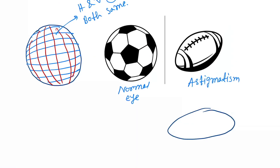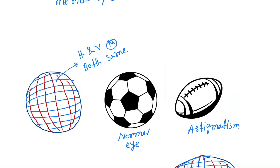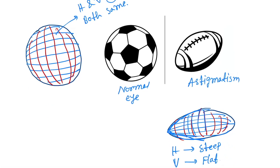In the rugby ball shape, we draw the horizontal meridian and the vertical meridian. You can see that the horizontal meridian is more curved — it is steep — while the vertical meridian is flat or less steep. This is the basic difference between a normal eye and astigmatism.